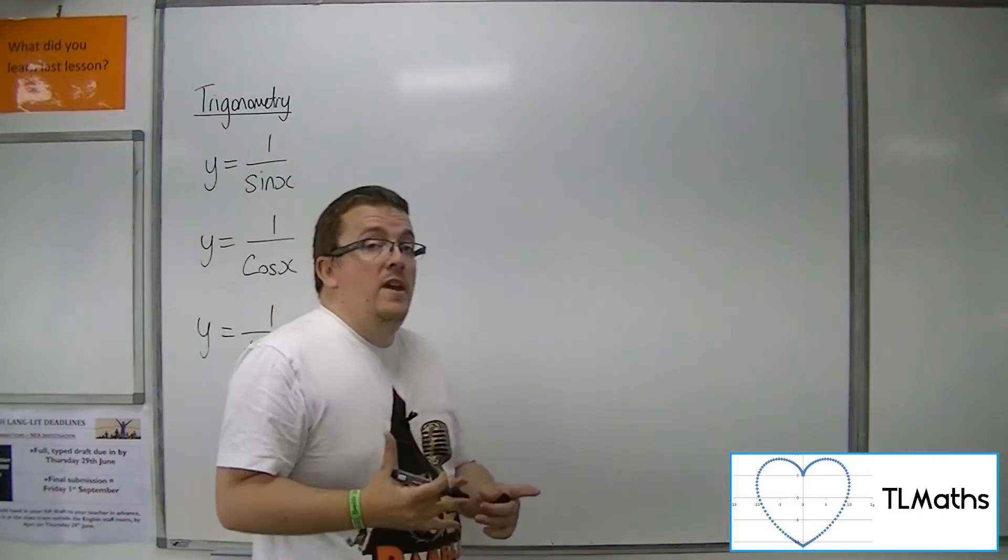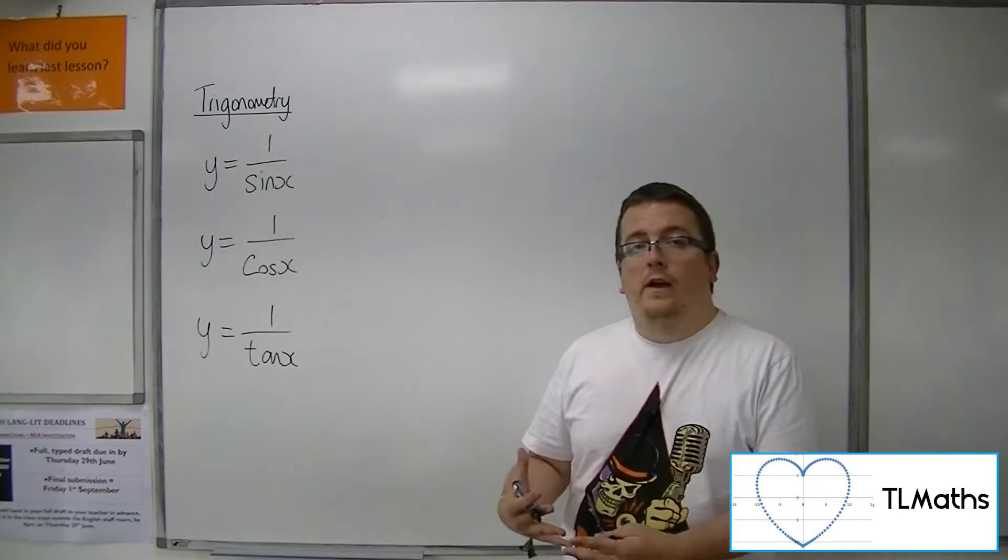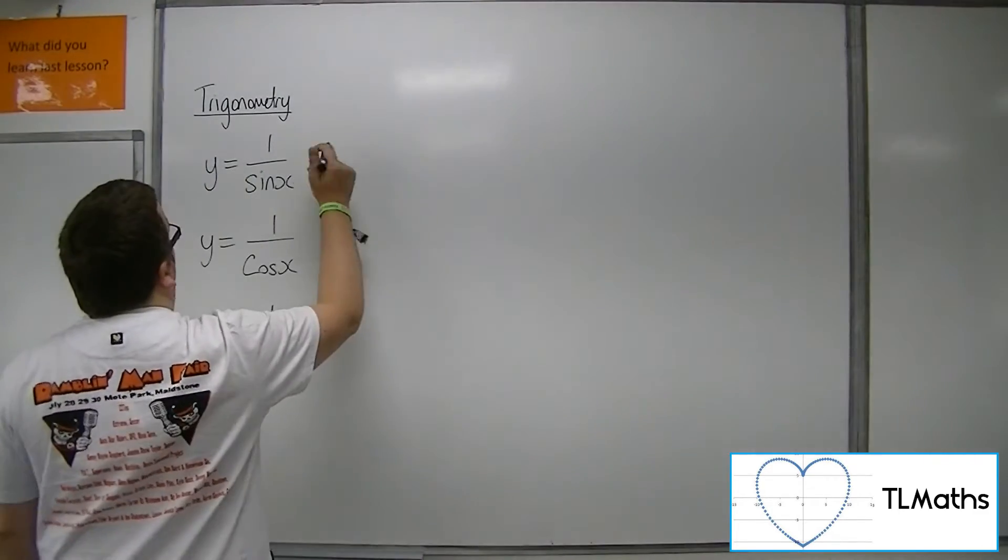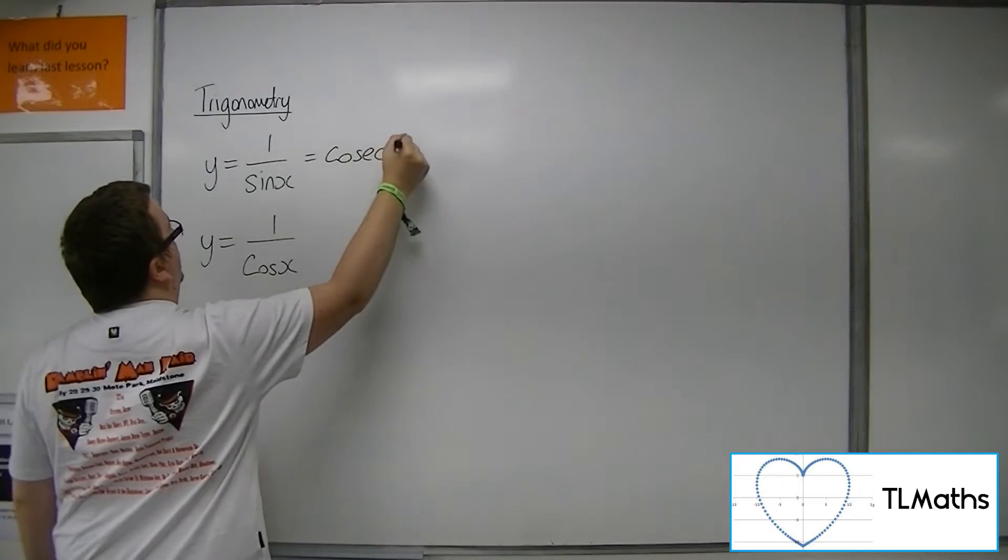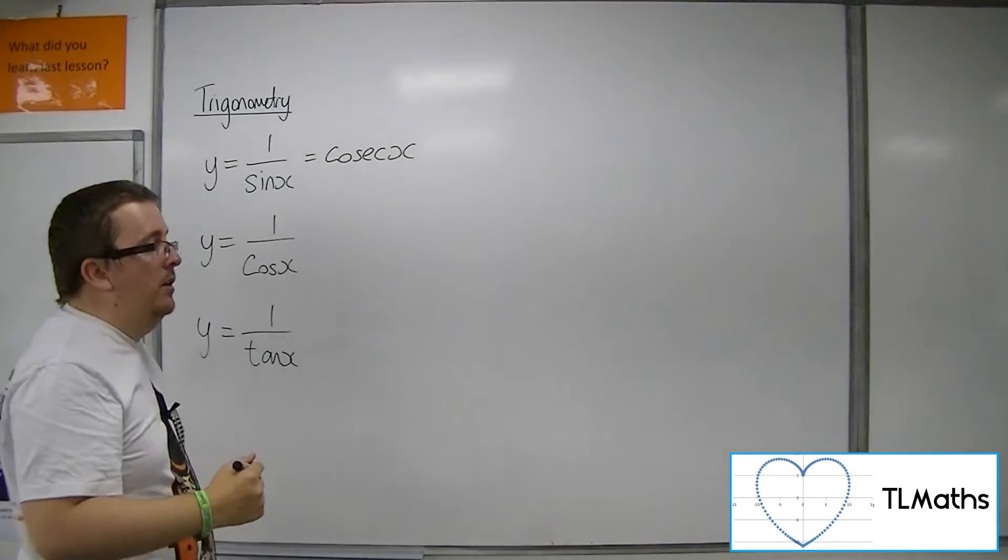So these three reciprocal functions have their own names. So one over sin is known as cosec x, or cosecant of x.